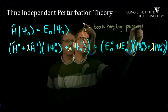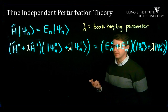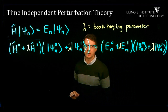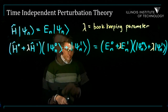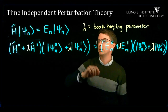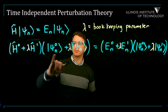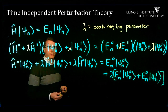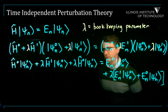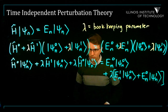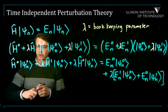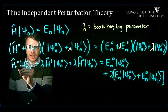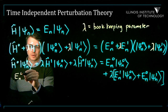Lambda is a bookkeeping parameter — it just keeps track of which quantities are small. This is a small correction to the wave function, and this is a small correction to the energy level. We're going to expand this out to leading order, keeping only terms of order lambda and ignoring terms of order lambda squared. After expanding and neglecting order lambda squared terms, we know how to solve the zeroth order or unperturbed wave function: H-hat-zero on psi-n-zero gives E-n-zero psi-n-zero.